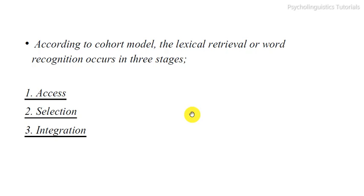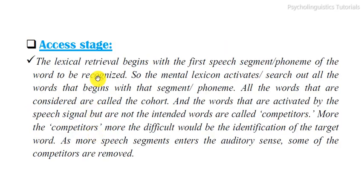According to the cohort model, lexical retrieval or word recognition occurs in three stages: first is access, second is selection, and third is integration.